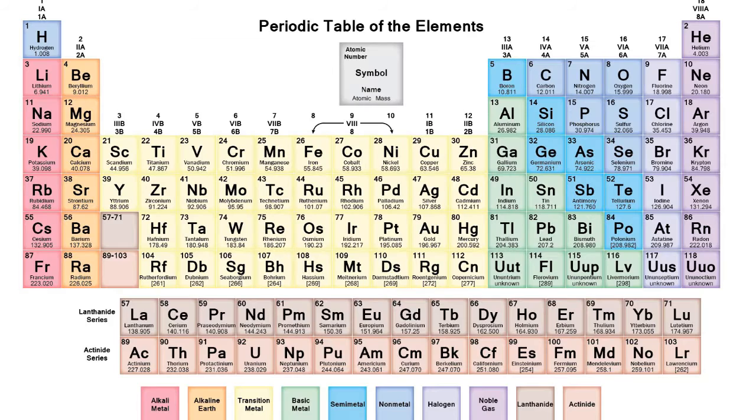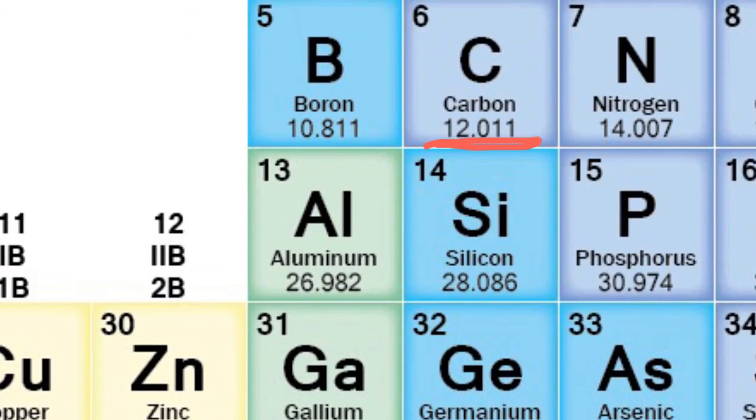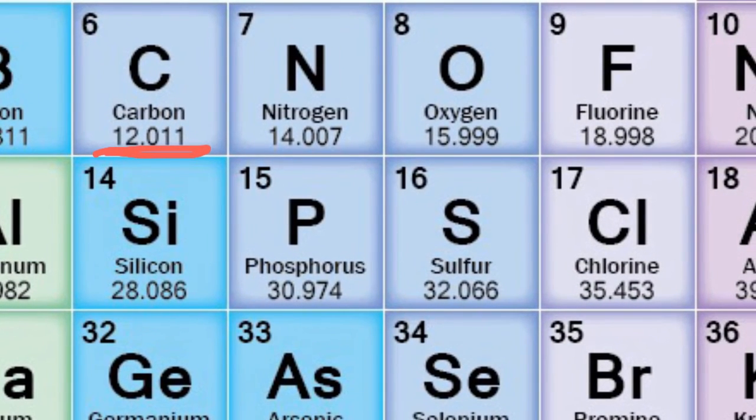If we look up carbon in the periodic table, its atomic mass is 12 amu. We can use this relationship to estimate the amount of any substance. Looking up oxygen, its atomic mass is 16 amu, so one mole of oxygen weighs 16 grams.